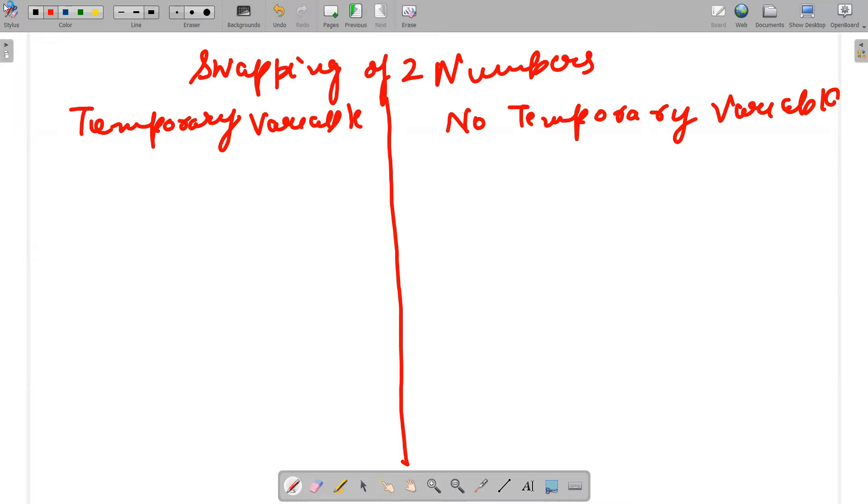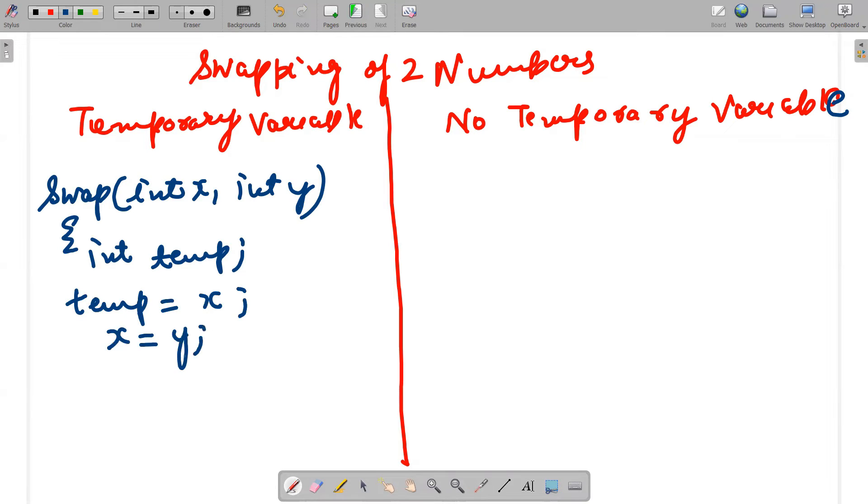So actually it can be done in two ways. One with using temporary variable. If I'm using temporary variable, let's say the swap syntax would be swap(int x, int y), and I'm using temporary variable int temp. Then I can use the logic of temp = x, x = y, y = temp.